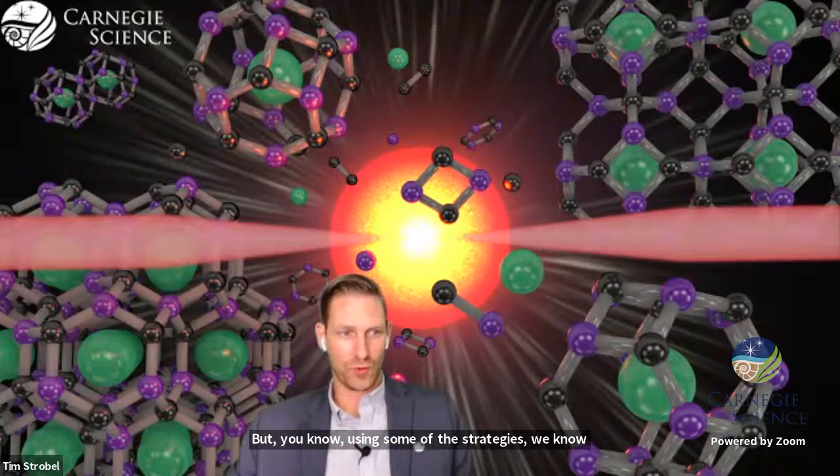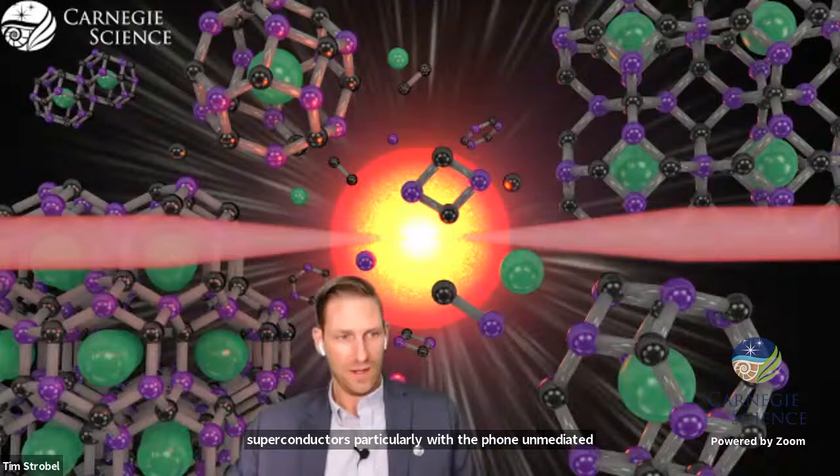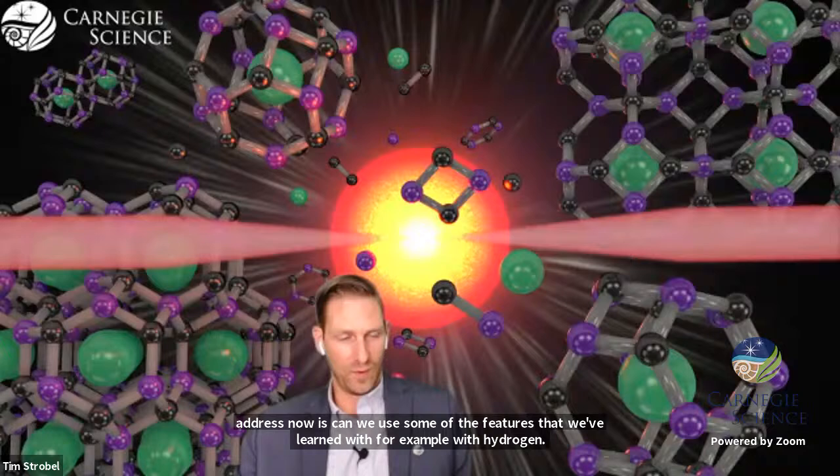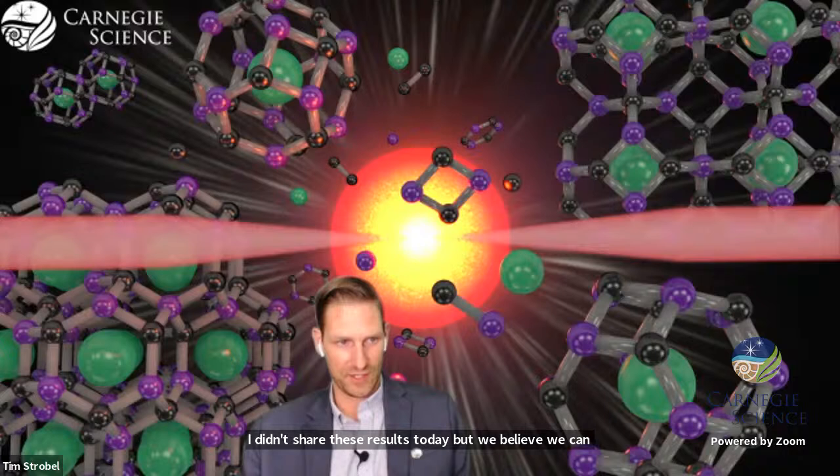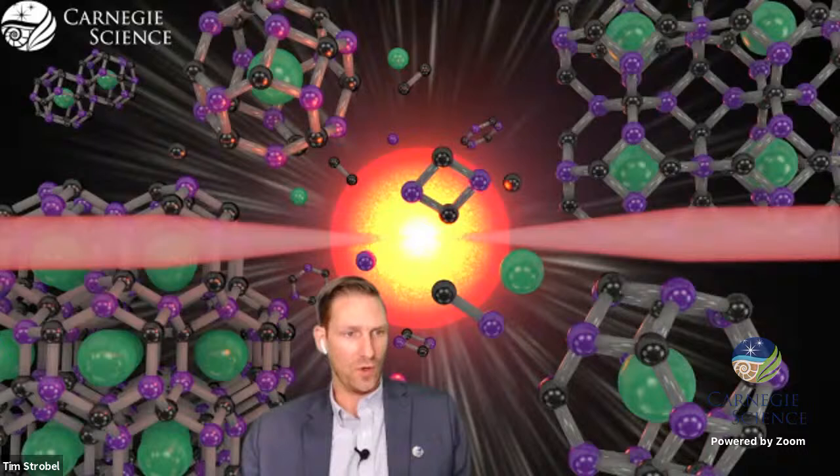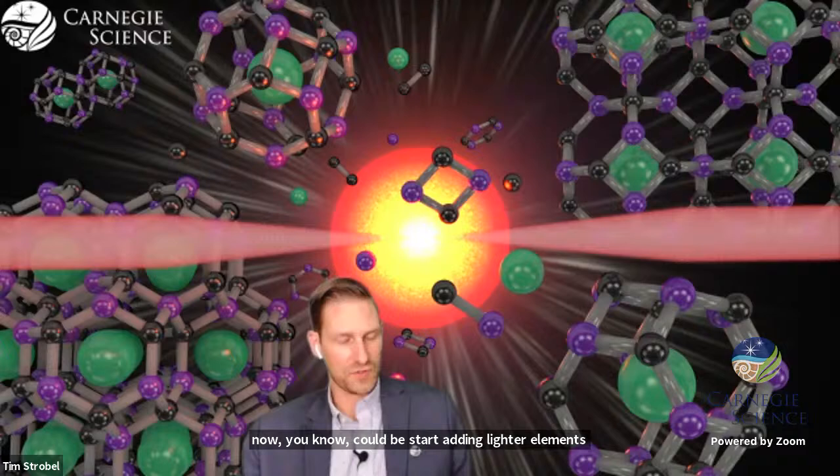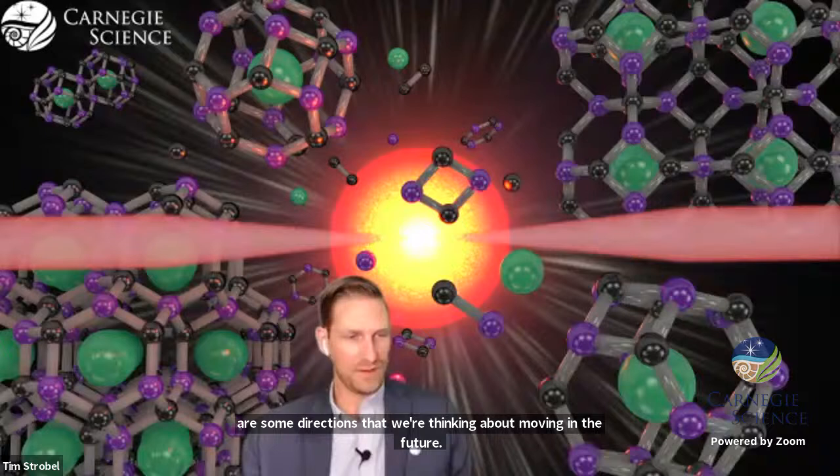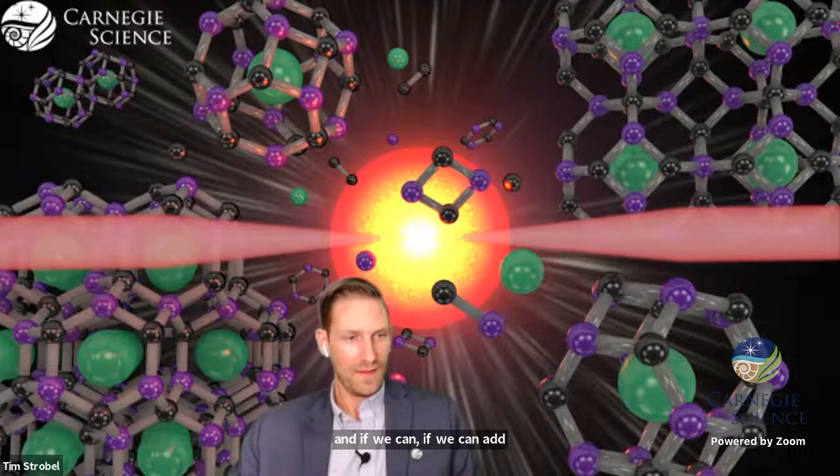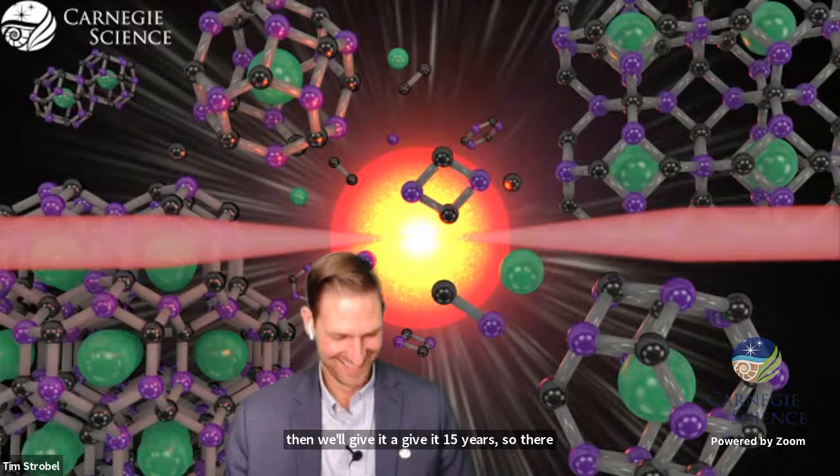But using some of the strategy, we know a lot of the fundamental properties now that drive these superconductors. One of the fundamental questions that we're trying to address is can we use some of the features with hydrogen by using other light elements. I didn't share these results today, but we believe we can get up to approximately 100 kelvin in one particular structure type. So let's say we can do 100 kelvin in five years and if we can add 100 kelvin at the same rate, then we'll give it 15 years.